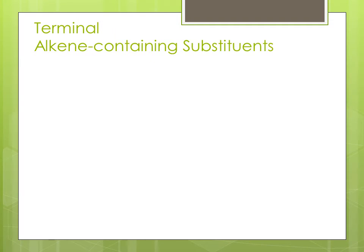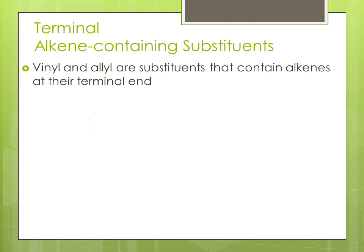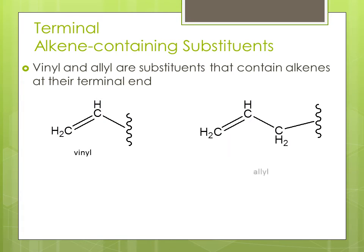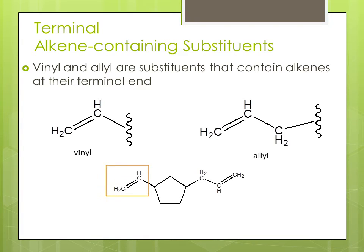Terminal alkene containing substituents. Vinyl and allyl are substituents that contain alkenes at their terminal ends. Here's an organic molecule utilizing a vinyl and an allyl group.